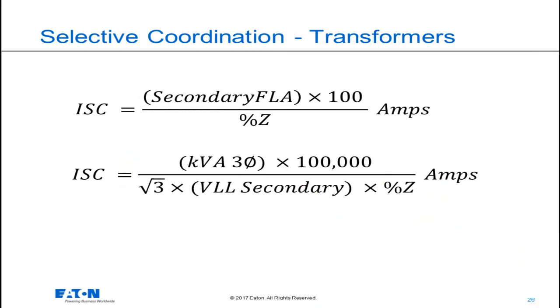These are the two equations that you need to know. The first equation is useful when you have the nameplate of the transformer in front of you. Usually, the secondary full load amps is printed on the nameplate, as is the percent impedance. The second equation is useful when you are provided with the kVA, voltage, and percent impedance of the transformer during the design phase. The connection of the transformer primary and secondary windings, meaning delta, wye, or other, does not impact these calculations.